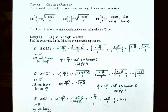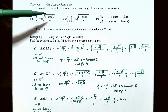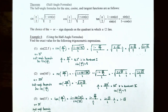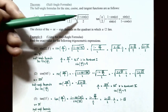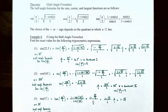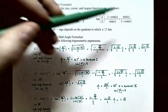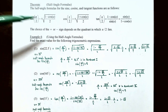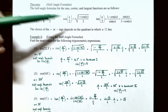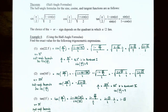Now let's talk about the half angle formulas. The half angle formulas for sine, cosine, and tangent are: sin(u/2) = ±√[(1 − cos u) / 2], cos(u/2) = ±√[(1 + cos u) / 2], and tan(u/2) = (1 − cos u) / sin u = sin u / (1 + cos u). The choice of plus or minus for sin(u/2) and cos(u/2) depends on the quadrant in which u/2 lies.